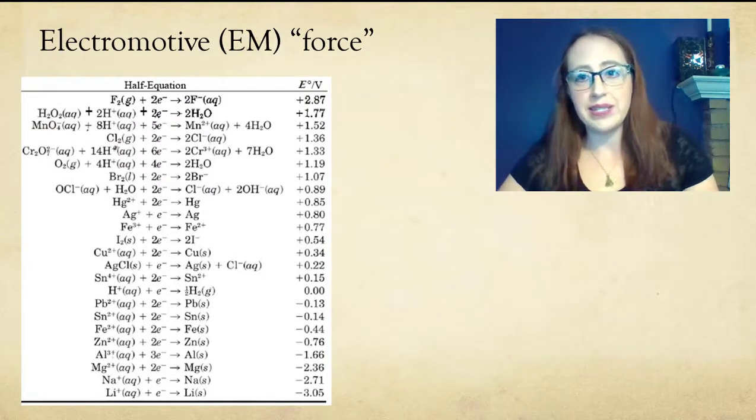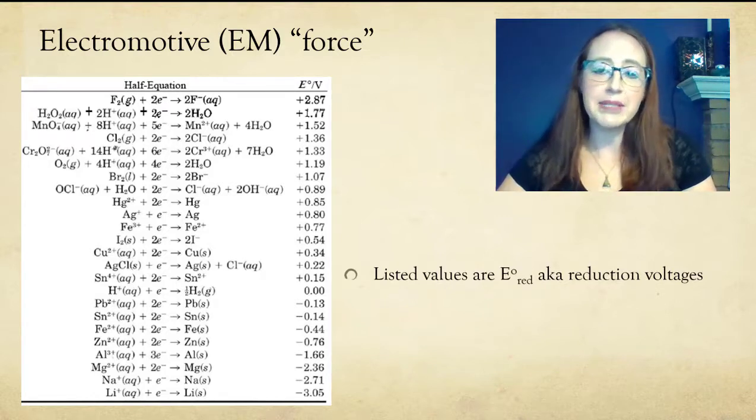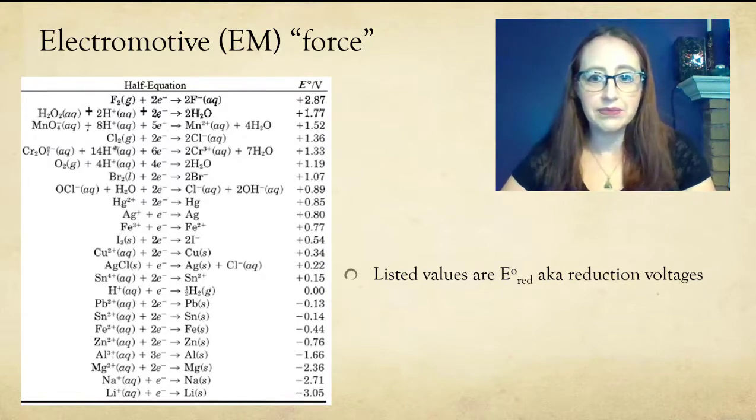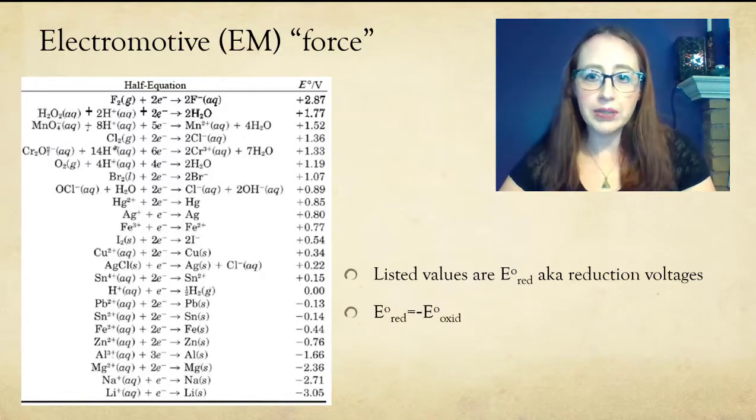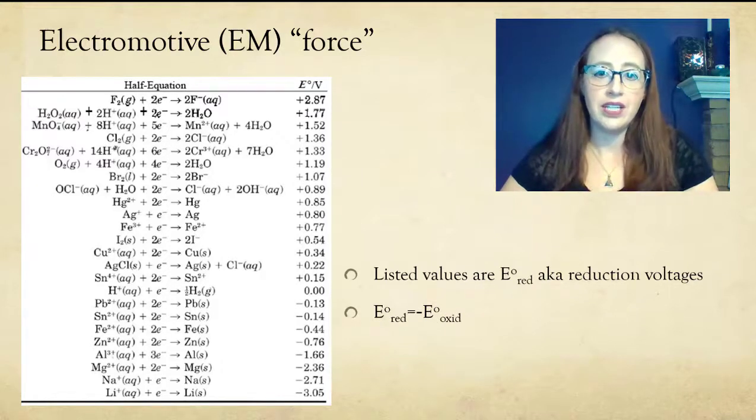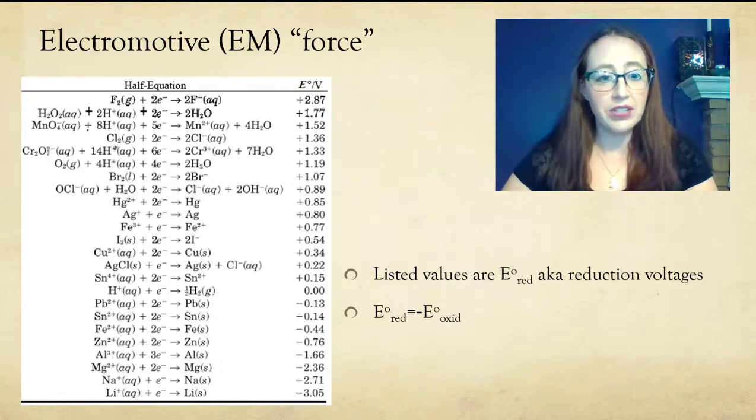So how does this relate to a cell? Well, the voltage of a cell is the difference in the potential energy between the anode and the cathode. Or in other words, if you add up the two half cell voltages, ensuring that you remember to change the sign of the oxidation half reaction, you'll get your cell voltage.